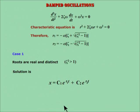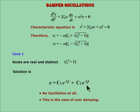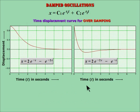Three cases arise. Case 1: zeta squared is greater than 1. The roots are real and distinct. The solution is as shown. This solution shows that there is no oscillation at all. This is the case of overdamping. Two typical curves of this type show that the displacement becomes zero after some time. It may cross the mean position but only once.